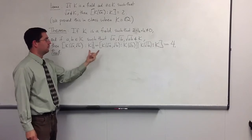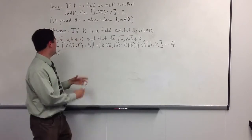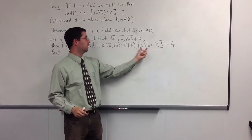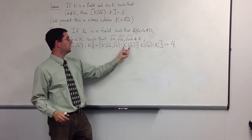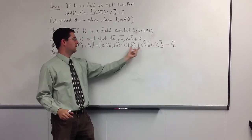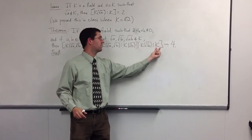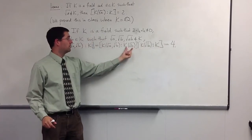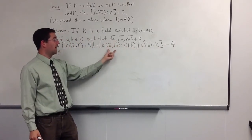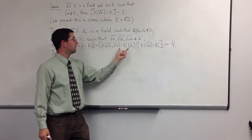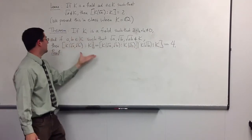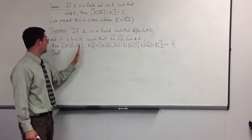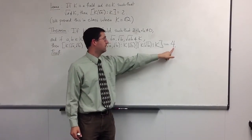In class, we proved that you could take a field like this and find a subfield between k and the whole field, and the dimensions would break up in the following way: if we first extended k by √b, and then extended k(√b) by √a, the dimensions multiply to give the dimension of the entire field extension. The claim is that this is going to have degree 4.